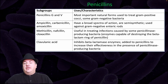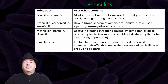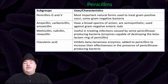Ampicillin and amoxicillin have a broad spectrum of action, are semi-synthetic, and are used against gram-negative enteric rods. Methicillin is useful in treating infections caused by some penicillinase-producing bacteria, which are enzymes capable of destroying the beta-lactam ring of penicillin. Clavulanic acid inhibits beta-lactamase enzymes and is added to penicillins to increase their effectiveness in the presence of penicillinase-producing bacteria.